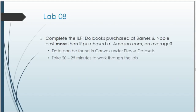Now let's start the ILP. The question is: do books purchased at Barnes and Noble cost more than if purchased at Amazon.com on average? We'll be working with a specific data set — it explains how to load it in Archimander within the ILP. The data can be found in Canvas under Files in the data sets folder. Pause the video and take about 20 to 25 minutes to work on the ILP, then we'll go over the harder questions together.